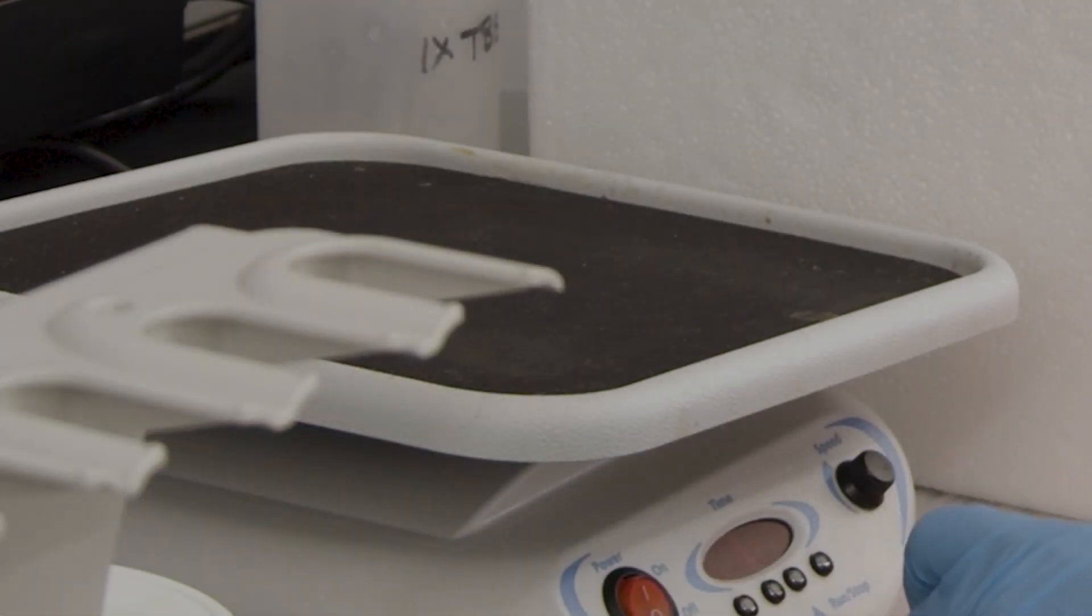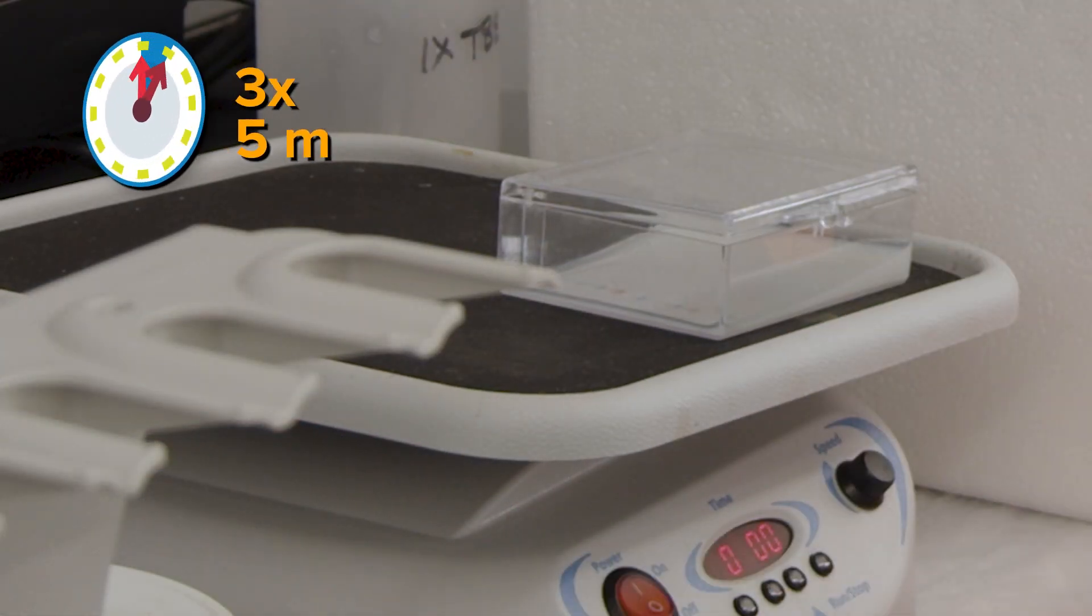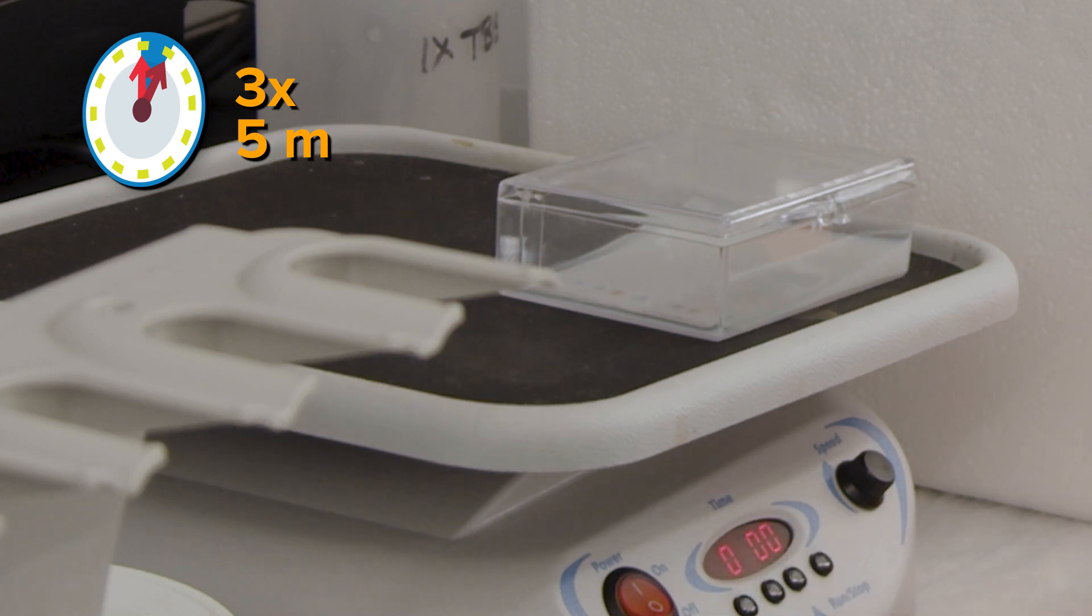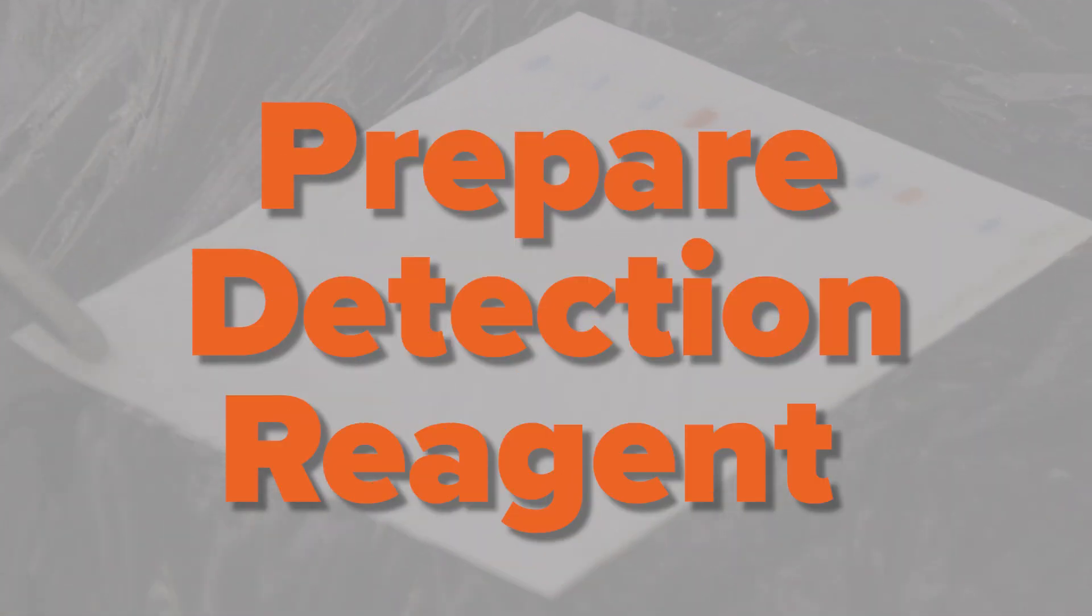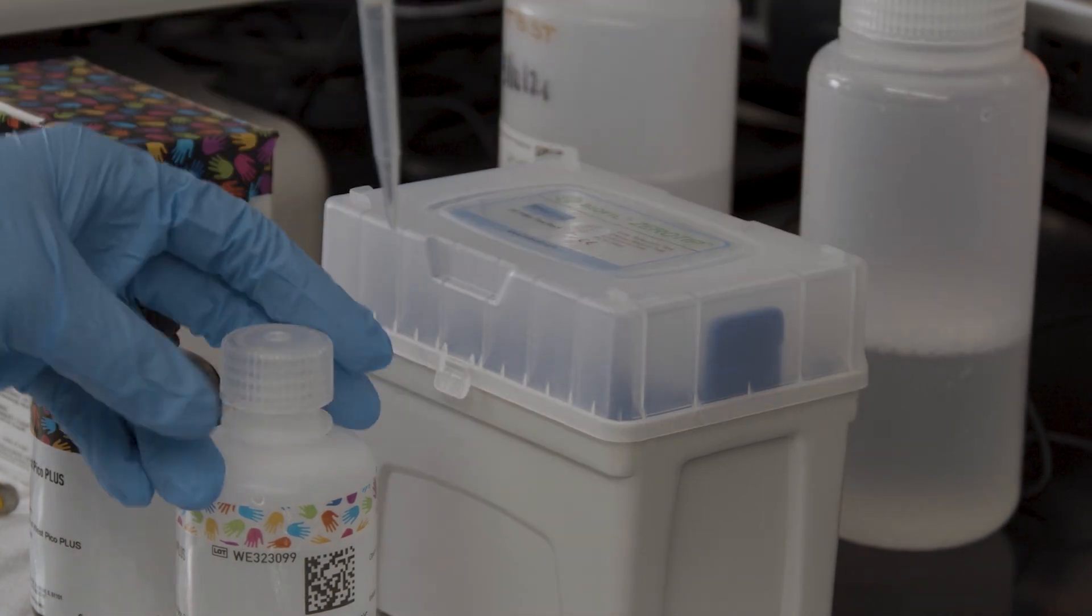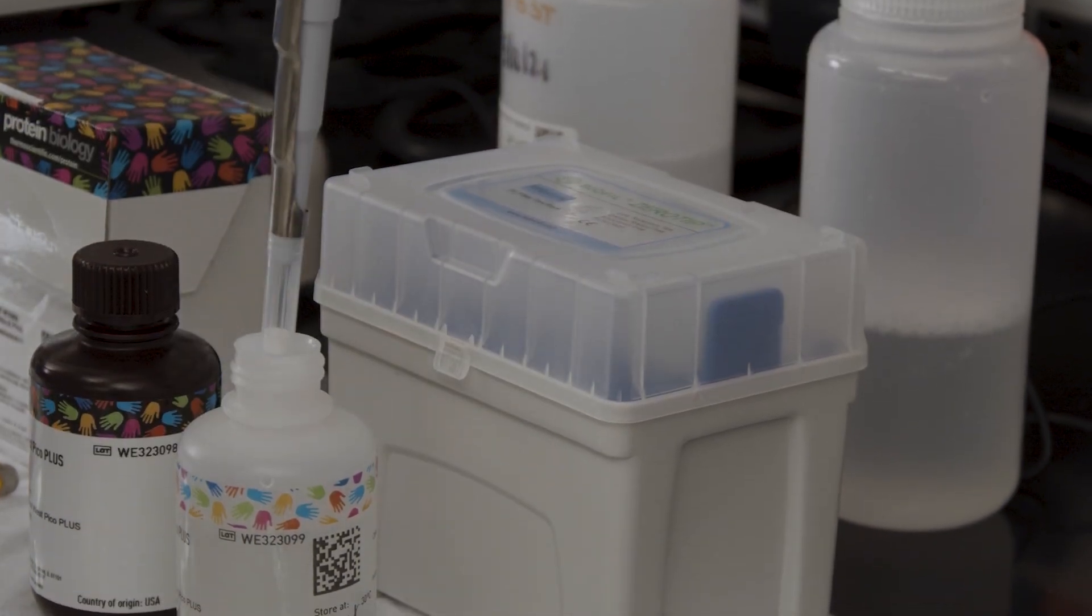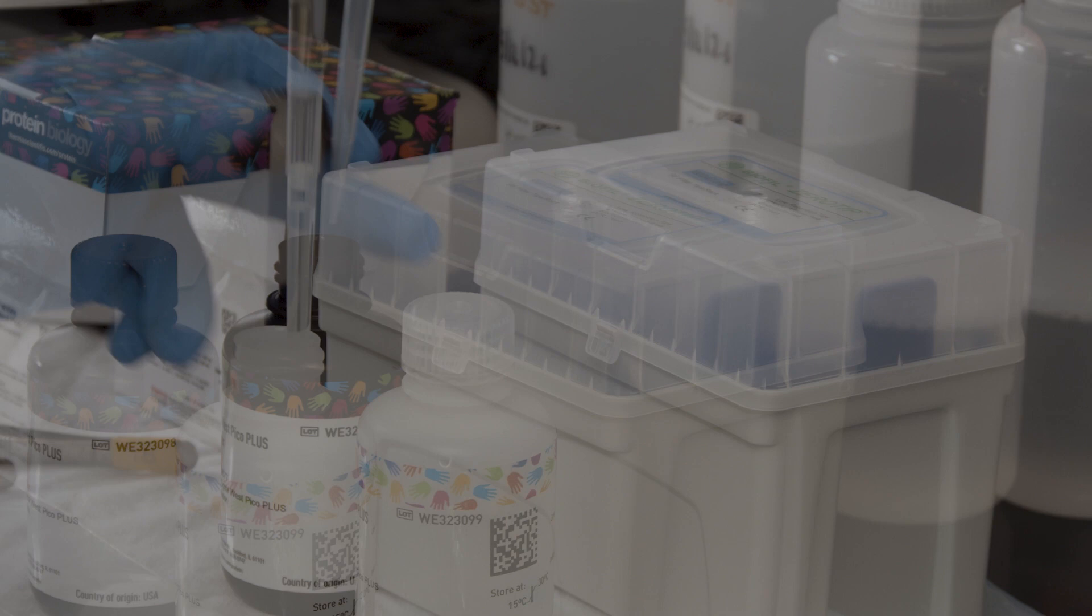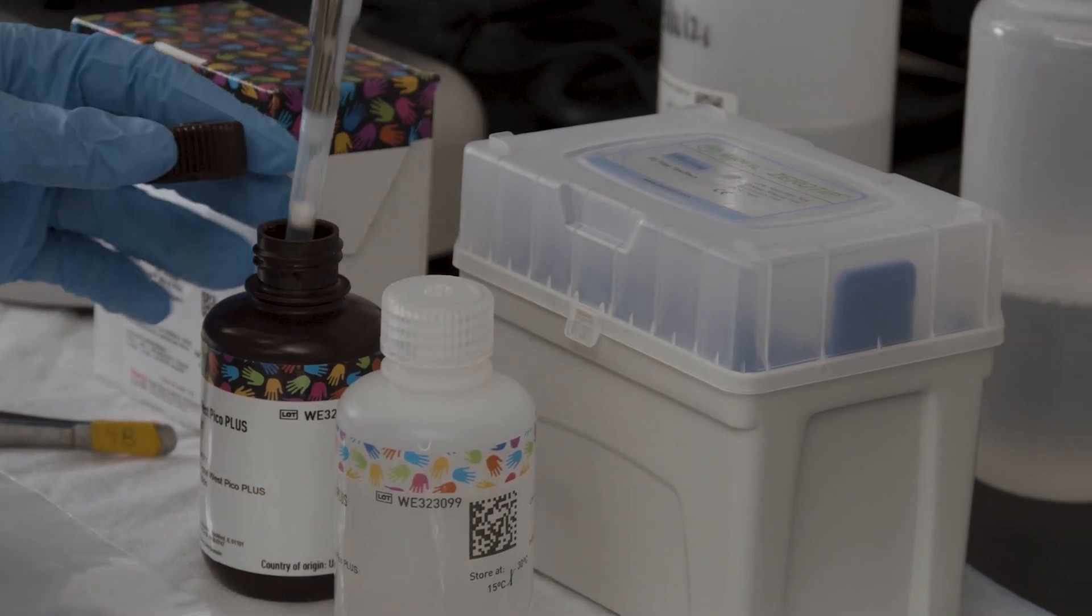After incubation, wash the membrane three times for five minutes in the wash buffer. During the third wash, prepare the detection reagent. The specific detection reagent used will depend on the conjugation of the secondary antibody, but it's typically horseradish peroxidase or alkaline phosphatase. For the horseradish peroxidase detection method, combine a one-to-one mix of solutions A and B on a piece of plastic wrap.